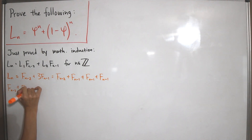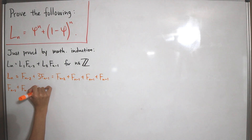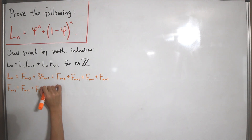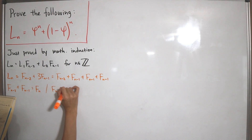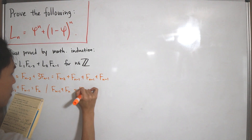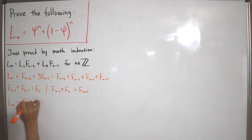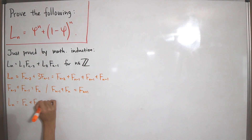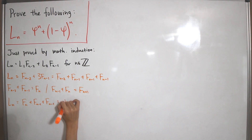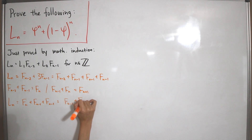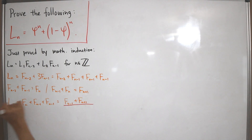By the Fibonacci definition, F_{n-2} + F_{n-1} = F_n, and F_{n-1} + F_n = F_{n+1}. Substituting back, L_n = F_n + F_{n-1} + F_{n-1}, and then L_n = F_{n-1} + F_{n+1}. This identity will now be used with Binet's formula for Fibonacci numbers.